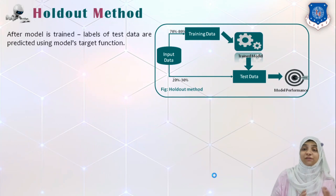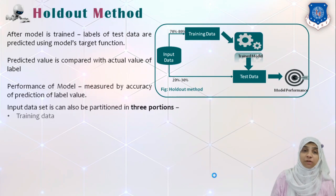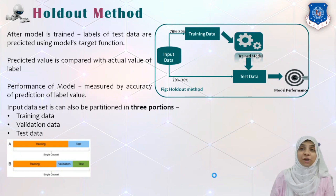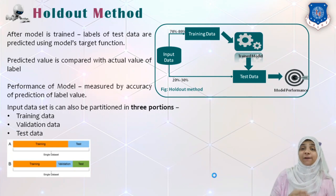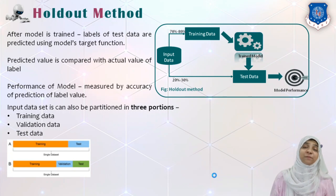We have kept this 20-30% of data for testing the performance of a model. The labels of this test data are first given to the model and its values or labels are predicted using the model's target function. We then compare the predicted value with the actual value of the label, since labels are already known, and find the accuracy of prediction.